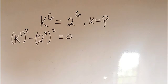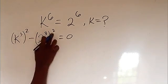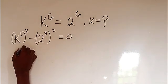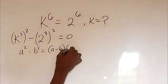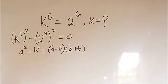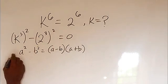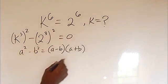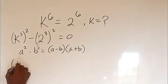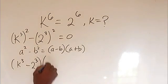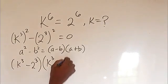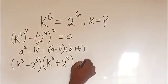Now we have a difference of two squares. Recall that a² minus b² gives us (a minus b)(a plus b). So we write this left-hand side as: k to the power of 3 minus 2 to the power of 3, times k to the power of 3 plus 2 to the power of 3, equals zero.